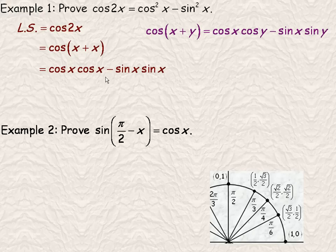Instead of cos x cos y, it'll be cos x cos x, because the second variable is x as well. And on the end after this subtraction sign, it won't be sin x sin y, it'll be sin x sin another x.